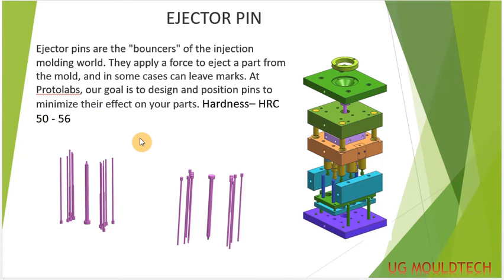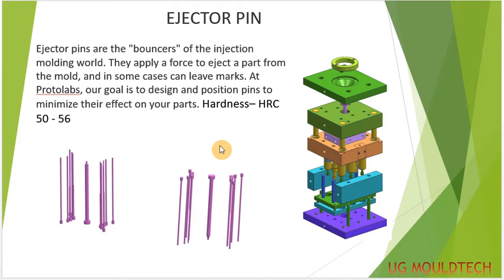Now the next is ejector pins. The ejector pins are the bouncers of injection molding — they apply a force to eject the part from the mold. In some cases they can leave a mark, because they are pushing directly on the part. So we design it such that there are minimal visible marks — our goal should be to design and position them to get the minimum marks. The hardness will be 50 to 56 HRC.